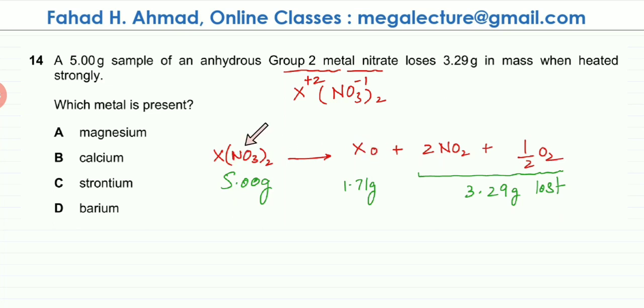One shortcut is that if you look at the equation, you would notice that 1 mole of metal nitrate produces 1 mole of metal oxide. So the mole ratio is exactly the same - it's 1 to 1.